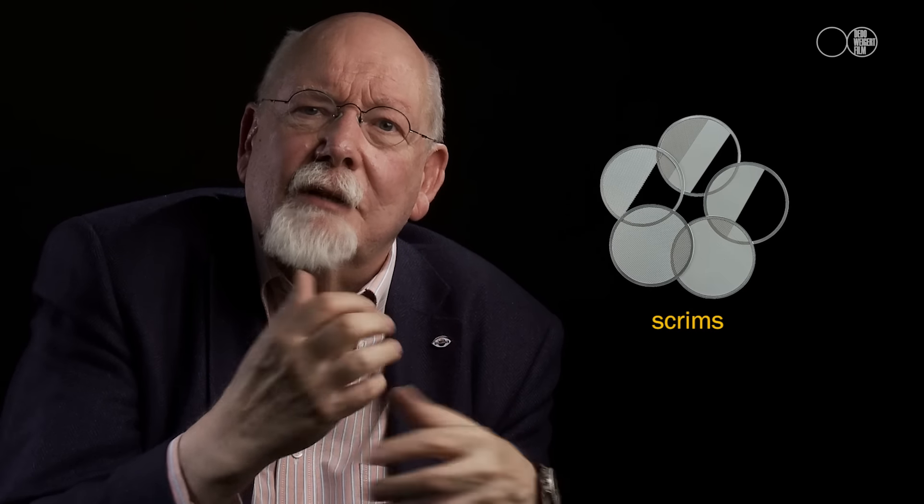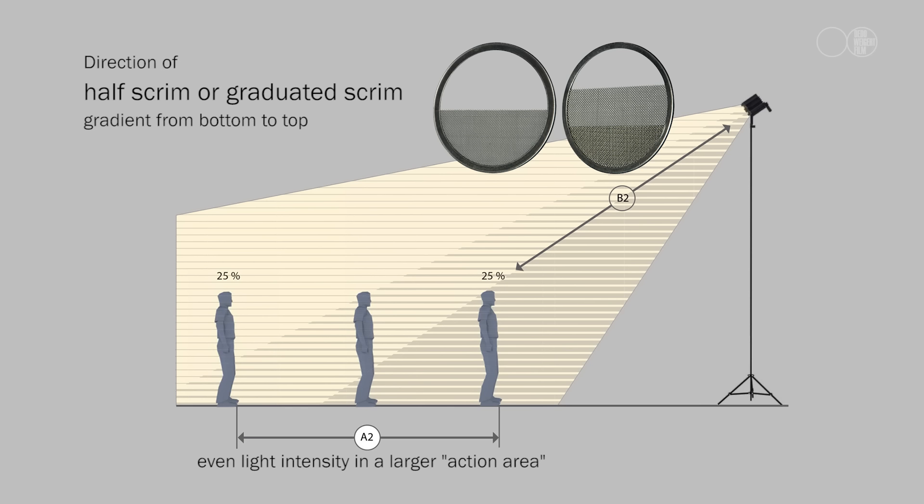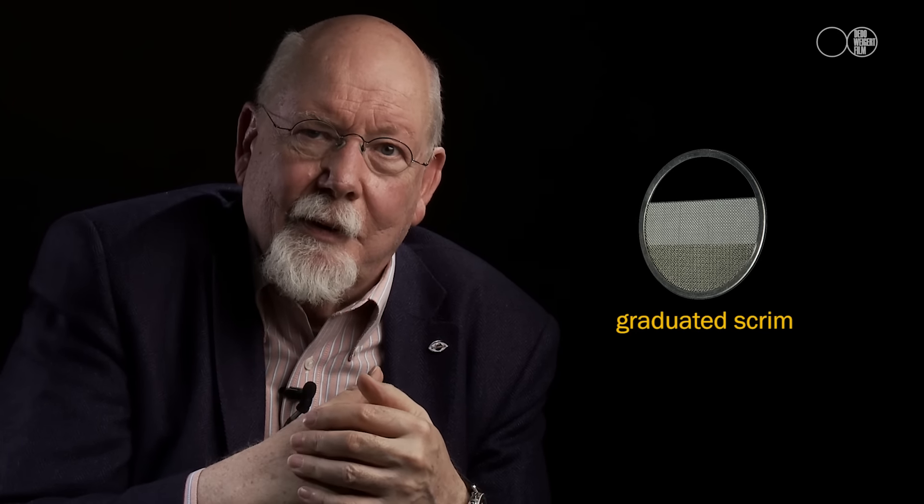Now there are some further tricks to cheat the square law in our normal working day. Scrims are wire nets which exist in different densities — one half, full, and double. Some of these are also cut in half, so that one half is open and the other half is covered by the net. When you use a focusing light in a downward-tilted position and your talent comes closer to the light, the intensity will rise drastically. The half scrim can help to minimize the intensity at closer distance. Another kind of scrim is called a graduated scrim, with three steps of intensity, and that may work even a little bit better.